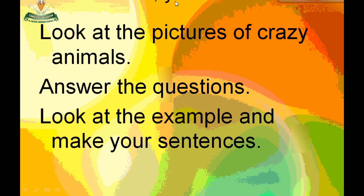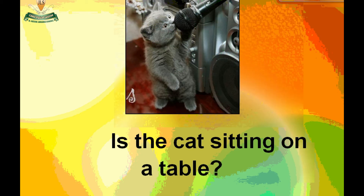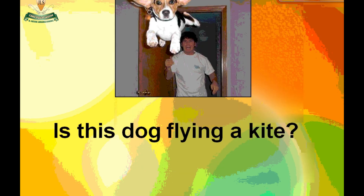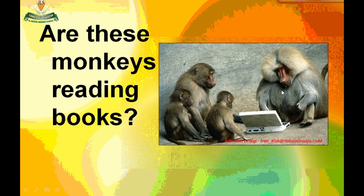Now it's your turn. Look at the pictures of crazy animals, answer the questions, and look at the example to make your sentence. Is the cat singing? Is the cat singing on a table? Is the dog flying a kite? Are these monkeys reading books? Think about the question and the answer.